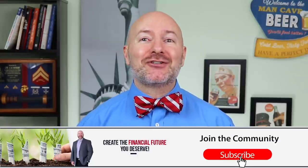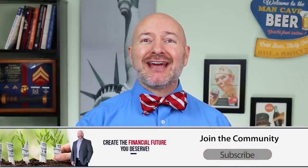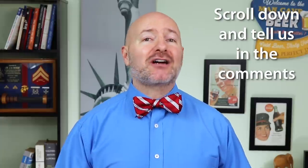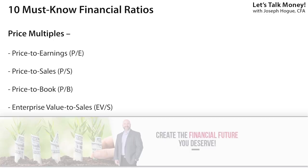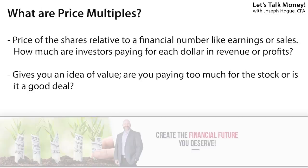Now let's get into those 10 financial ratios — but I also want to hear what you do to analyze stock picks. What are the financial measures and the analysis you use when looking over the best stocks to buy? Scroll down and let us know in the comments. Our first four ratios are everyone's favorites: the price multiples — price-to-earnings, price-to-sales, book-value and my favorite, enterprise-value-to-sales. Price multiples give you an idea of value in a stock and what price are investors willing to pay for the company's earnings or sales, and is that too high, low or just right? It's easy to see why investors love these so much because they tell you if you're getting a good deal.